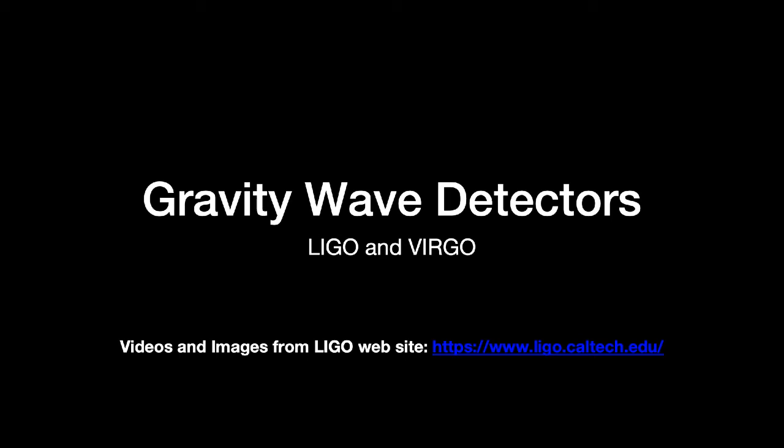Let's look at some pictures of gravity waves and how they're detected. The videos and images in this video come from the LIGO website. We're going to look primarily at the LIGO detectors, which are two gravity wave detectors on opposite sides of the US. Everything here is very similar to the European Virgo detector in Italy, but the particular movies I'm showing come from LIGO.